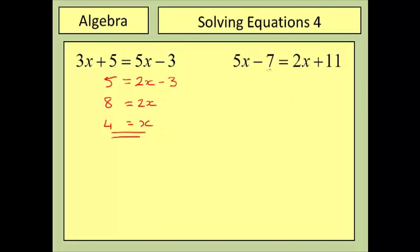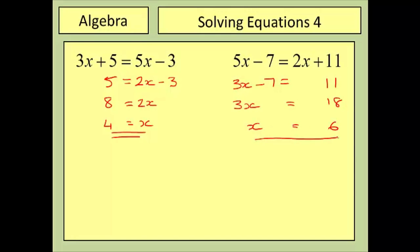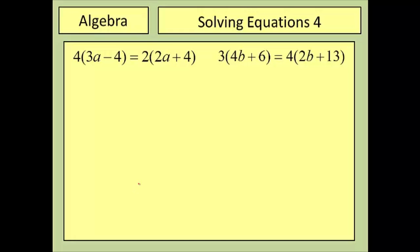For the second question, 5x minus 7 equals 2x plus 11: subtract 2x from both sides giving 3x minus 7 equals 11, then add 7 to both sides giving 3x equals 18, and finally divide by 3 — x equals 6.